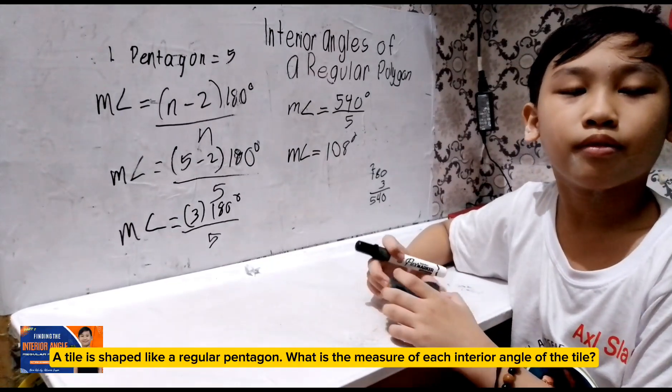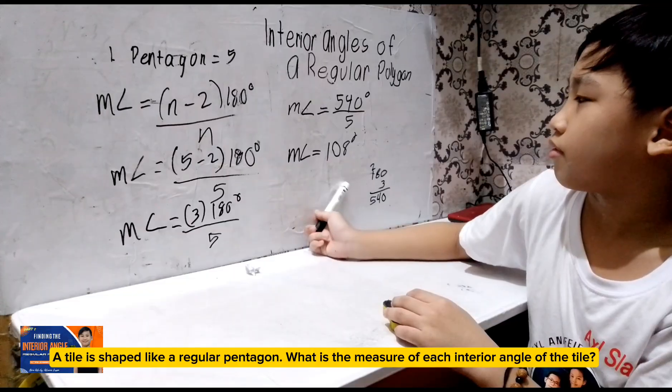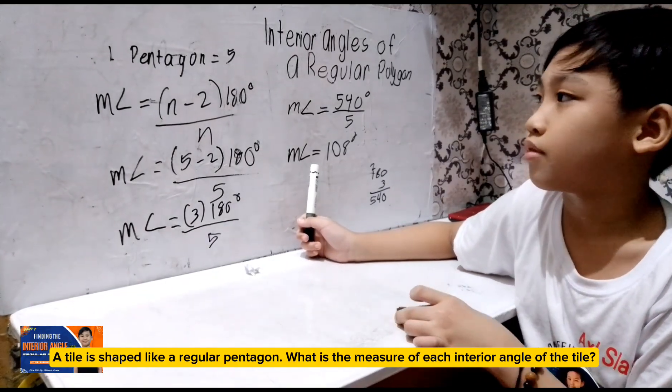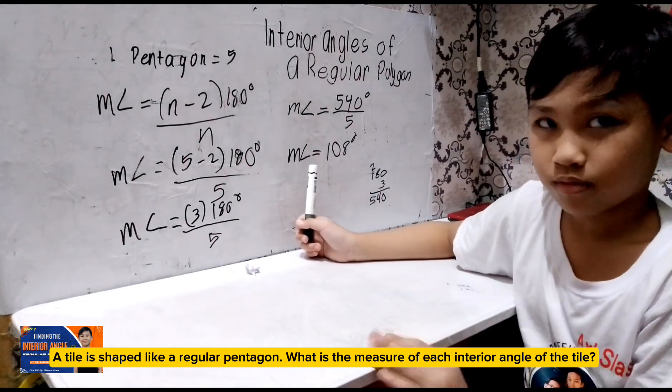Our correct answer for measurement of each interior angle is 108 degrees. So, the measurement of the interior angles for each interior angle is equal to 108 degrees. For the sum, you have 540 degrees. But we are asked to compute for the measurement of each interior angle. So, it's equal to 108 degrees. Very good.